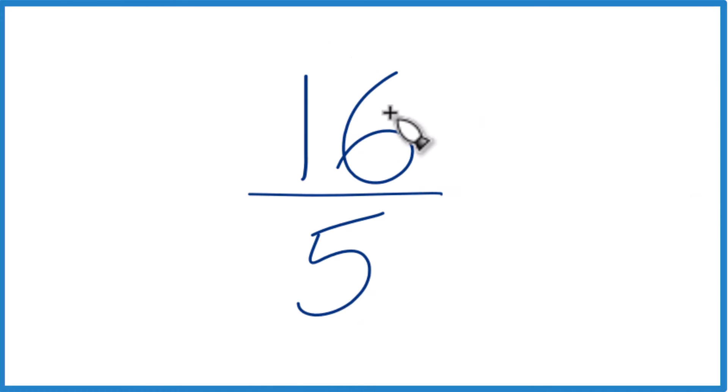We can't really simplify 16 fifths any further because the only number that goes into 16 and 5 evenly is 1. So it's already simplified. But let's get it to a mixed number.